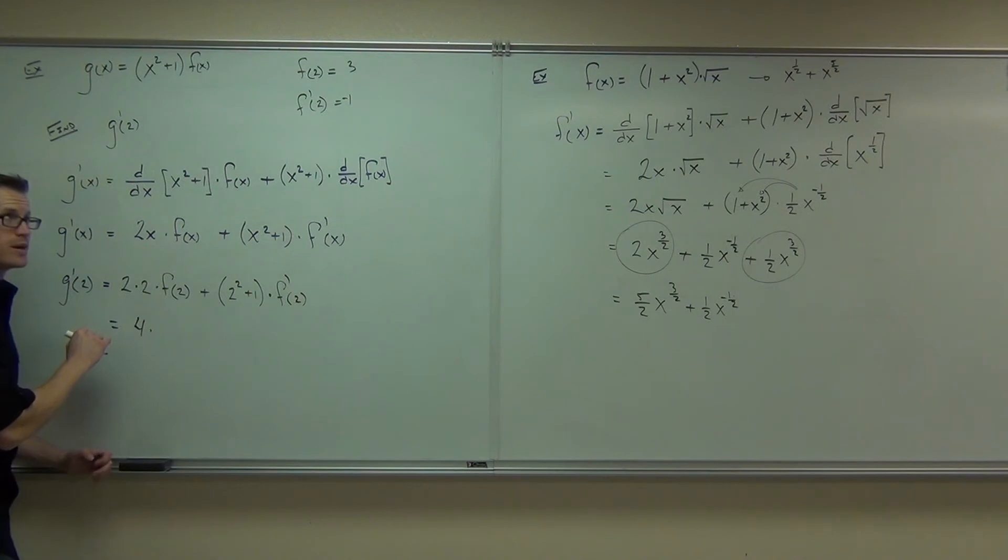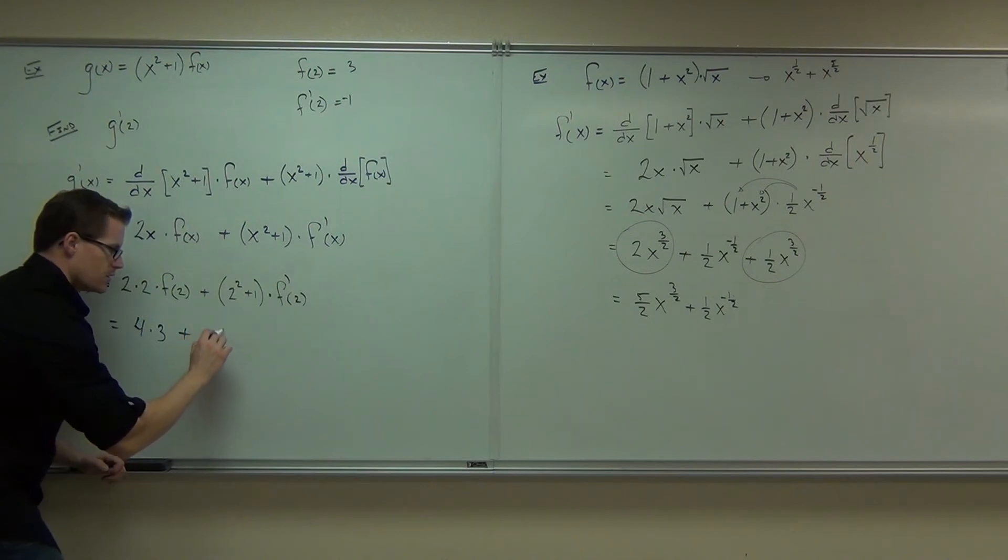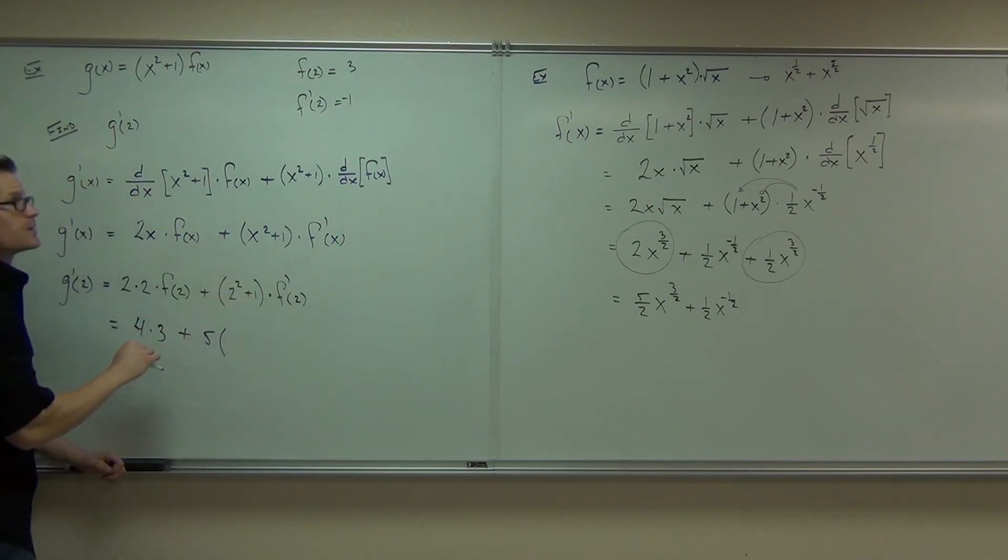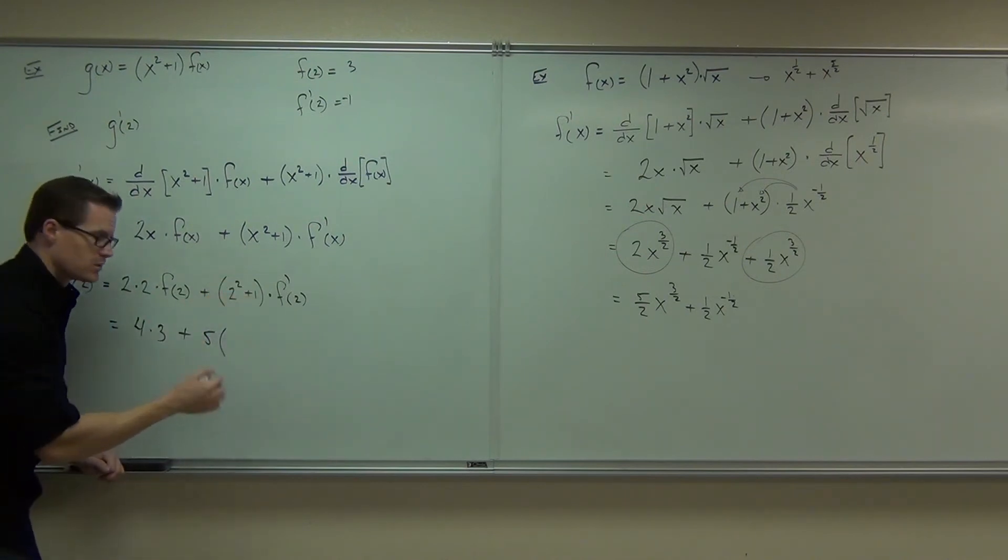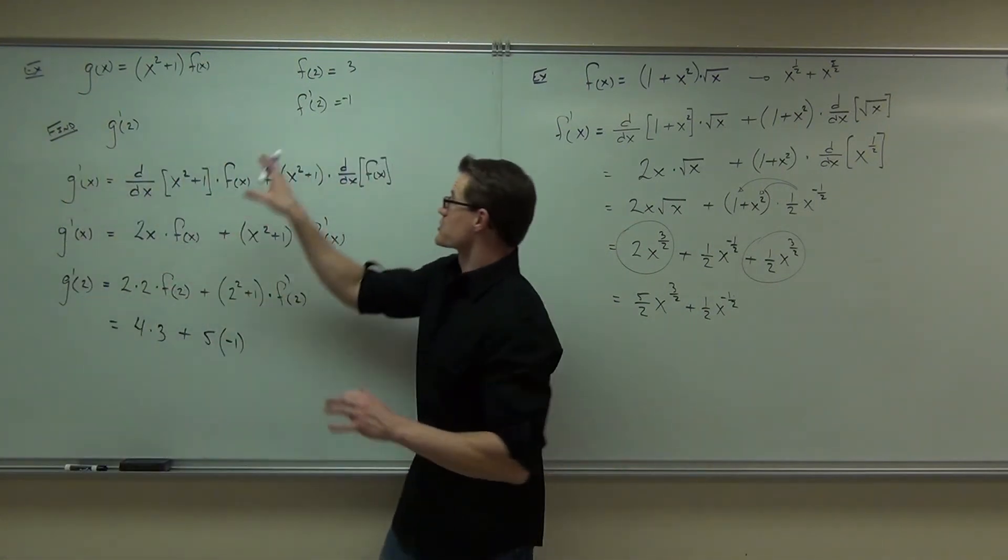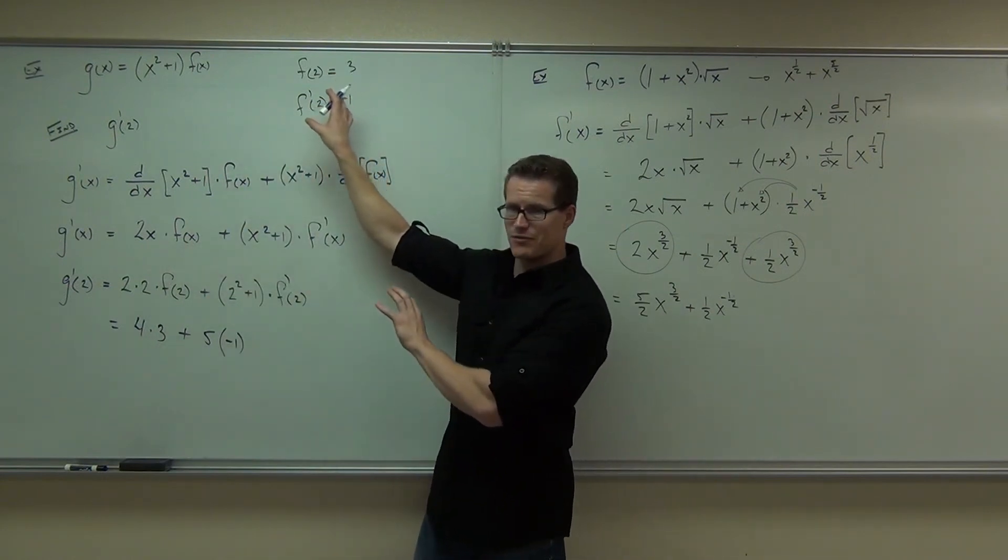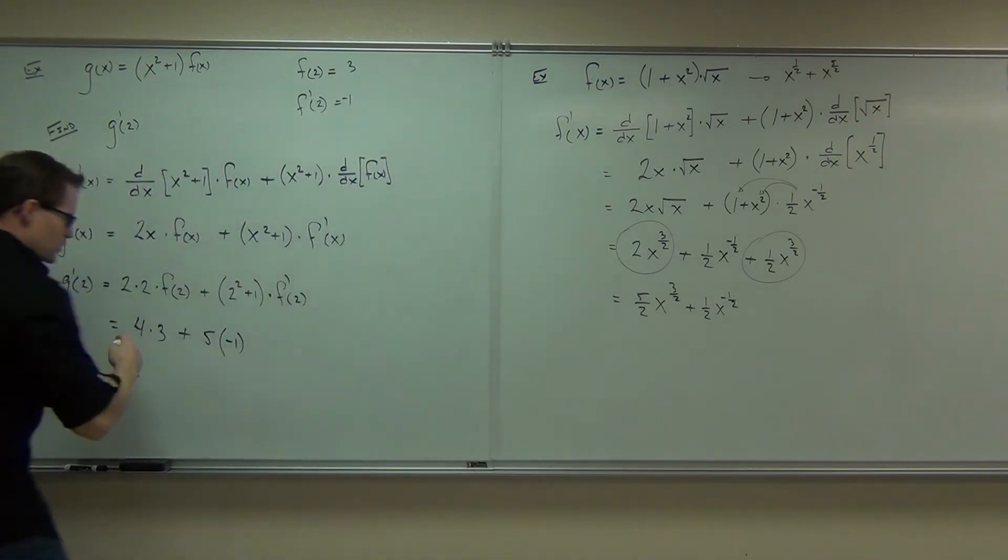I know that this is 2 times 2, so that is 4 times, hey, what is f of 2? Have I given you that information? 3. 4 times 3, plus this is all 5, times what's f prime of 2? Cool. Is it possible? Sure. They have to give you this, though. They have to tell you what that is. I wouldn't be able to do this without that specific information.